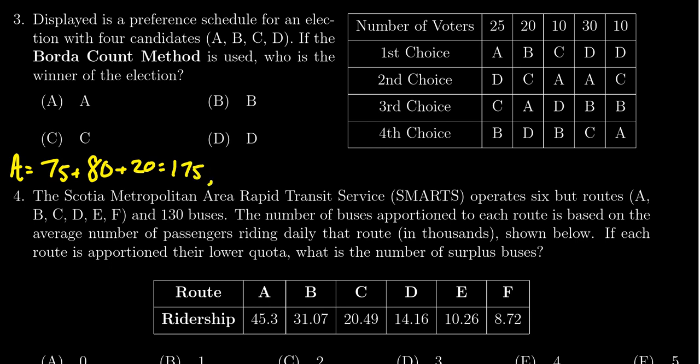All right, candidate B, similar type of thing. B is in first place 20 times, so we times that by 3 and we're gonna end up with 60. And then how about second place? Candidate B is never in second place. How about third place? Candidate B shows up there 40 times, so it gives 100 points.